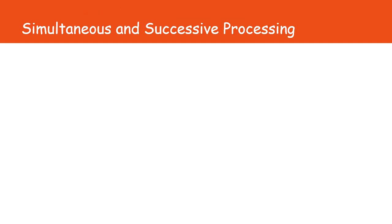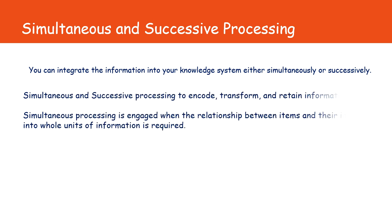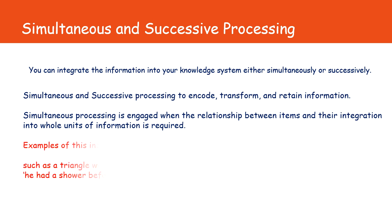The next component is simultaneous and successive processing. You can integrate information into your knowledge system either simultaneously or successively. Simultaneous processing helps to encode, transfer and retain information. It is engaged when a relationship between items and their integration into a whole unit of information is required. For example, simultaneous processing helps you in grasping the meaning and the relationship between abstract figures.